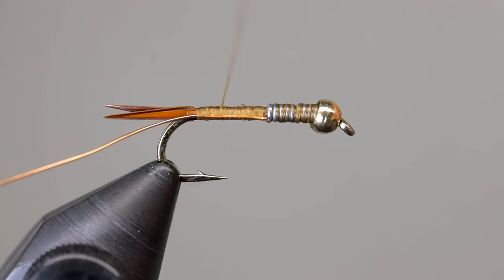Now move your thread back up to the thorax, but take your time to fill in any inconsistencies. The copper wire will exaggerate any bumps, so making a smooth underbody is crucial.